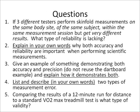For lab one there are five questions worth two points each. Question one: if three different testers perform skinfold measurements on the same body site within the same session but get very different results, what type of reliability is lacking? Question two: explain in your own words why both accuracy and reliability are important for scientific measurements. Question three: give an example demonstrating both accuracy and precision — do not reuse the dartboard example. Question four: list and describe two types of measurement error in your own words. Question five: comparing results of a 12-minute run for distance to a standard VO2 max treadmill test is what type of validity?